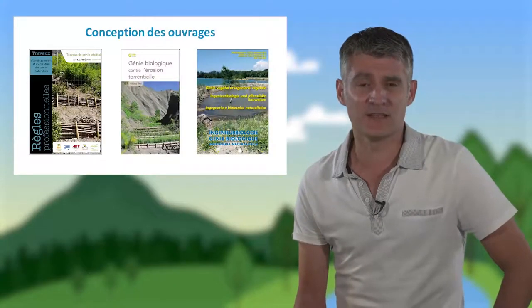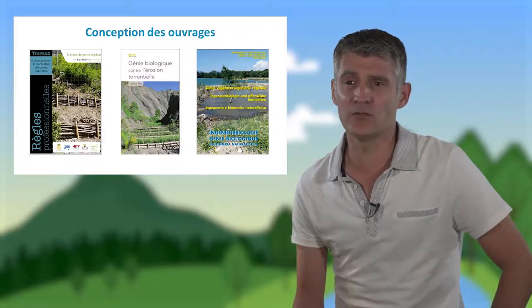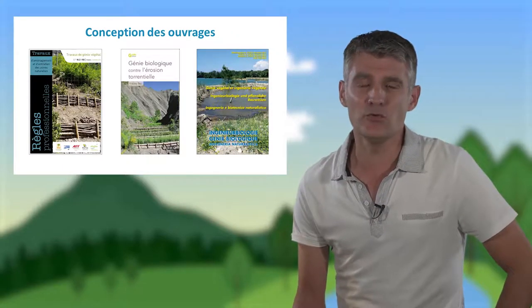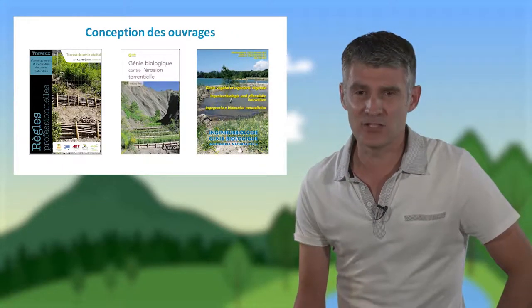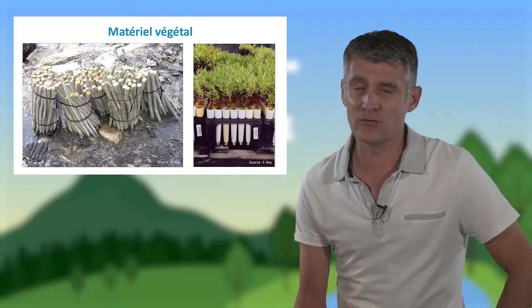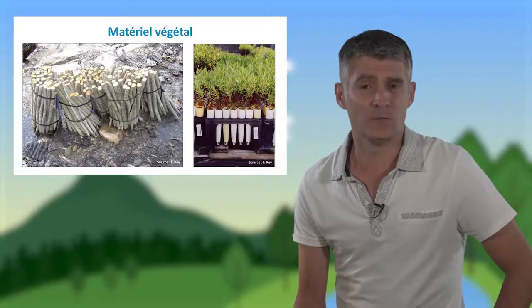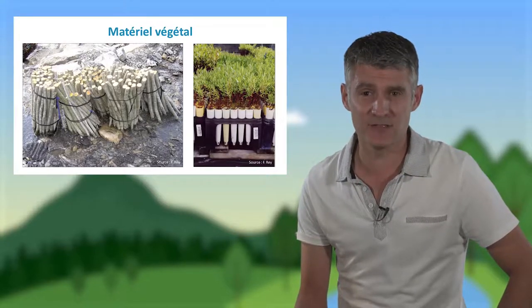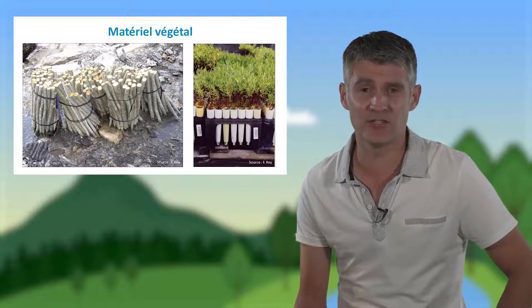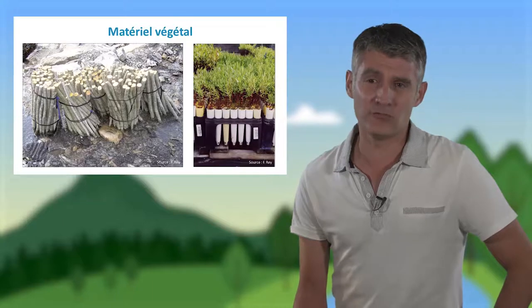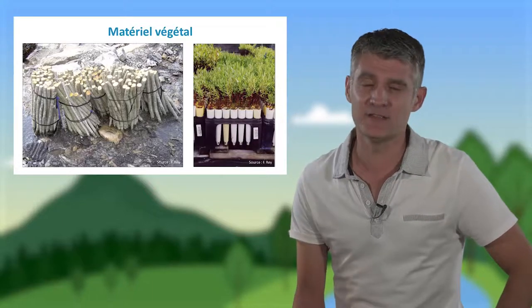Pour réaliser les ouvrages, on fait appel à des compétences et à un certain savoir-faire, qu'on va trouver dans différents types de guides et de manuels qui expliquent comment utiliser le matériel végétal. Dans le génie végétal, on a trois grands types de matériel : les graines, qu'on qualifie souvent de semences ; les boutures, qui sont des parties de plantes sans feuillage ni racines mais aptes à la reprise végétale ; et les plants qui ont, dès leur utilisation, un feuillage et un système racinaire.